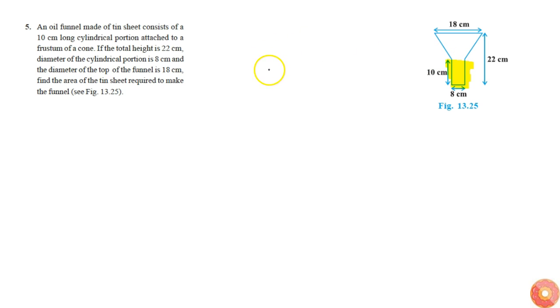The area of thin sheet required will be equal to the curved surface area of the cylindrical portion plus the curved surface area of the frustum.